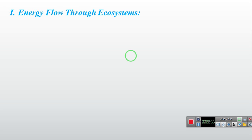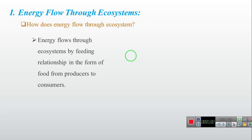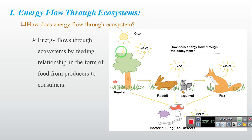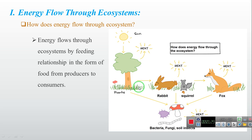Energy flows through the ecosystem. How does the energy flow through the ecosystem? Energy flows through the ecosystem by the feeding relationship, in the form of food, from the producer to the consumer. You can see in this picture — this is the energy flowing through the ecosystem, from the producer to the consumer.